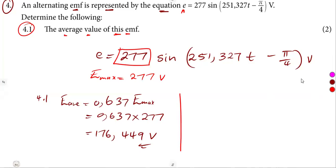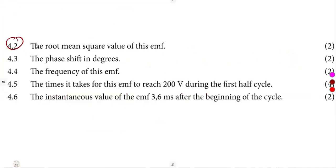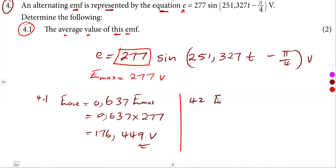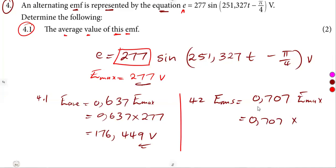For question 4.2, we are given to determine the root mean square value of this EMF — the RMS value. Remember, that's 0.707 of the maximum value. So substituting: 0.707 times our maximum value of 277 gives us 195.839 volts as the RMS value.